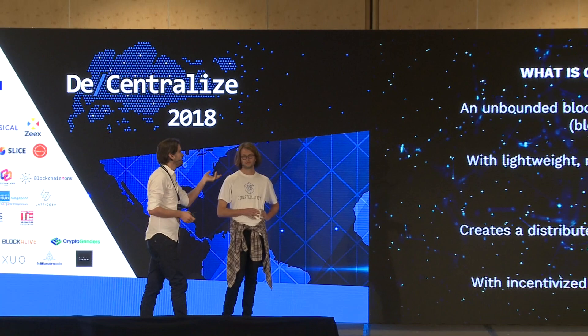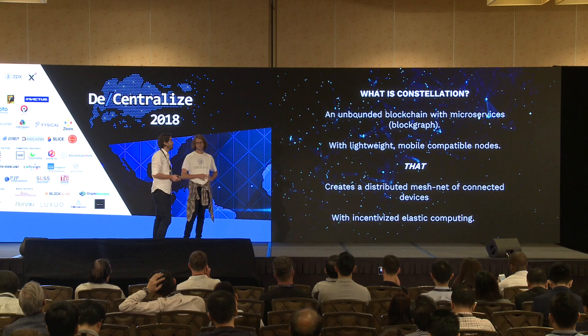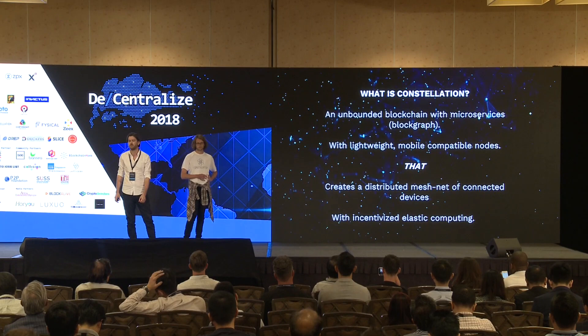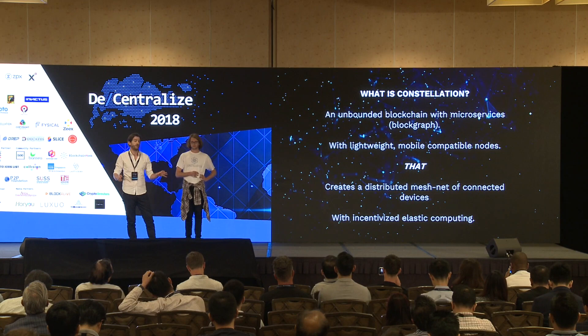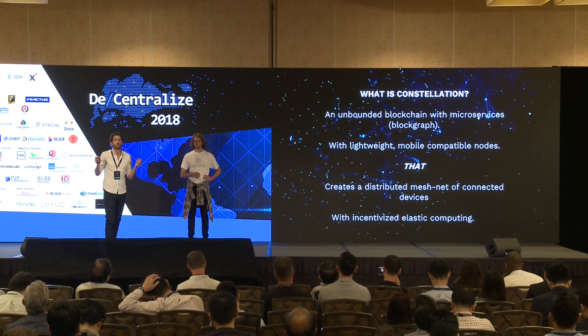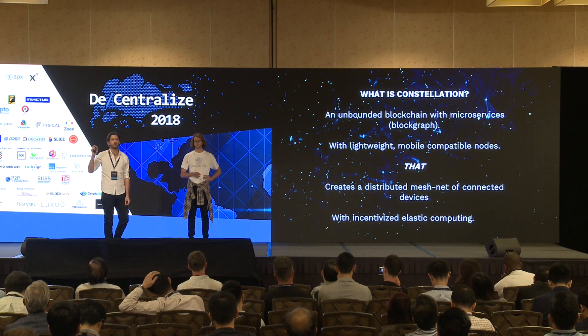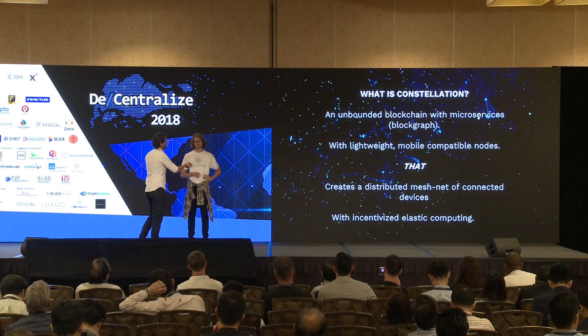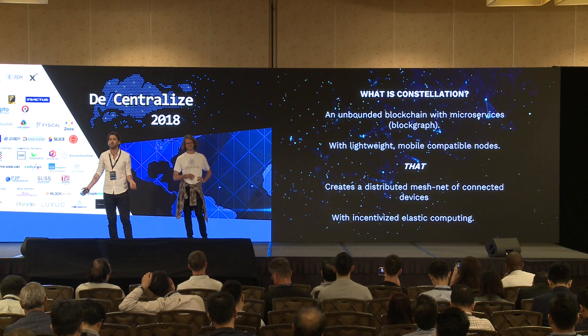We're using a new type of technology called a DAG — Directed Acyclic Graph — that has a checkpoint block system in its architecture. What we're coining as a block graph has lightweight, mobile-compatible nodes that create a distributed global mesh net of devices. Our vision is: there are roughly five billion mobile phone connections and seven billion actual mobile devices. When you aggregate all of that using our protocol, you could theoretically achieve 30 billion transactions per second, with each device contributing throughput to the network. On top of that, you layer in an incentivized elastic computational layer, rather like SETI at home, but tokenized.